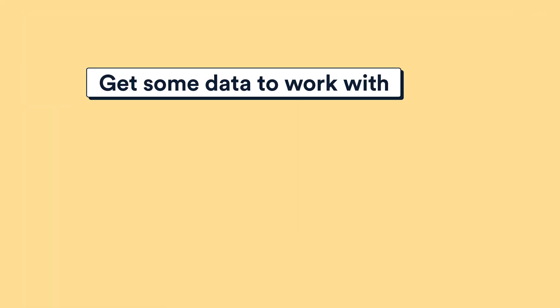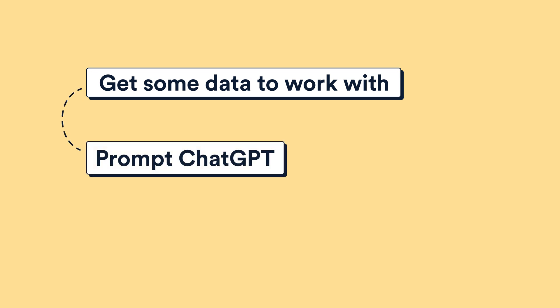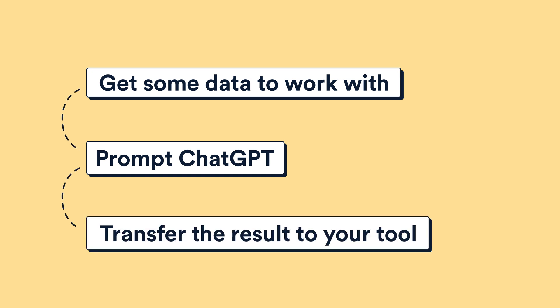What does each step mean? First, 'Get' means we need to start our automation by getting some data from somewhere — so that could be when a new email is received. Next, 'Prompt' — we're going to prompt ChatGPT, and that could be to come up with a proposed reply to that email.